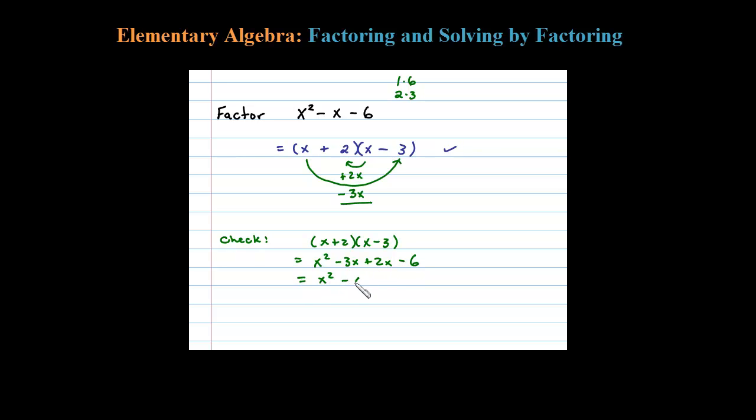Collecting up like terms, negative 3x plus 2x is minus x, minus 6. So notice we do get back to the original, so that means our factorization is correct. Let's go ahead and erase this. We don't have to show those steps. We went straight from the expression to its factored form.